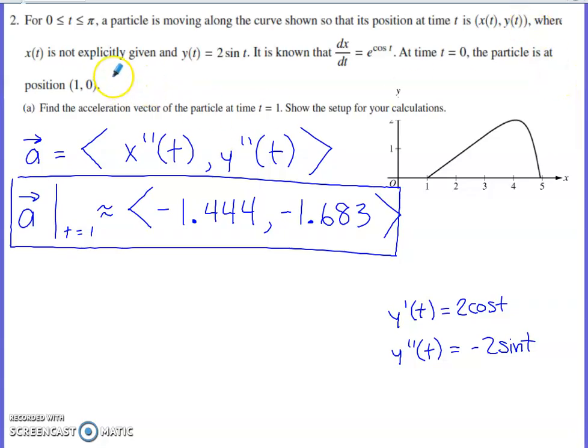They don't tell us what x of t is, but they do tell us that y of t is 2 sine of t. They do give us the expression for the derivative of x with respect to t. At time zero, the particle is at the ordered pair one comma zero.